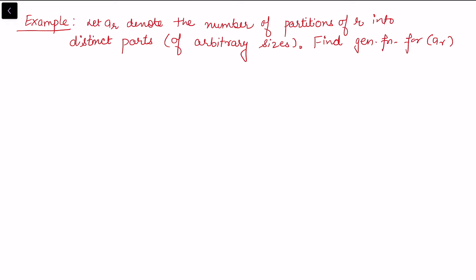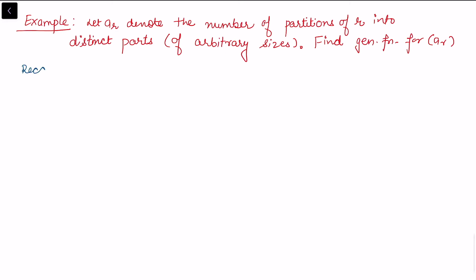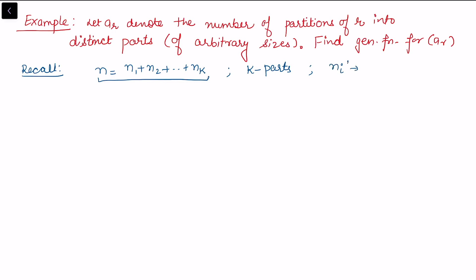In this video I'll be taking some more examples on generating functions for the partition of integers with some restrictions. This is my next video on generating functions and partition of integers; the previous video is linked. Let ar denote the number of partitions of r into distinct parts of arbitrary sizes. To recall: a partition of a positive integer n is a finite non-increasing sequence of positive integers n1, n2, up to nk whose sum is n. There are k parts, so the length of the partition is k, and the part sizes are ni.